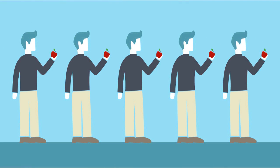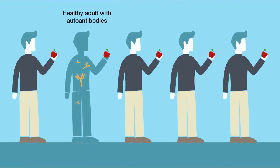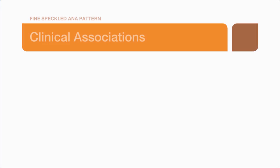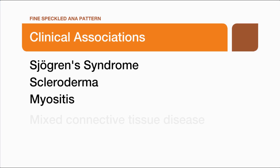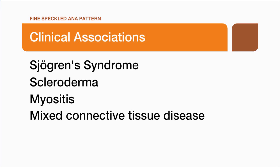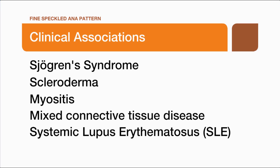It's important to note that healthy people can have a positive ANA-IFA and not have an autoimmune disease. The IFA test is to be used as an aid in diagnosis. Clinical associations of this test are Sjogren's syndrome, scleroderma, myositis, mixed connective tissue disease, and systemic lupus erythematosus.